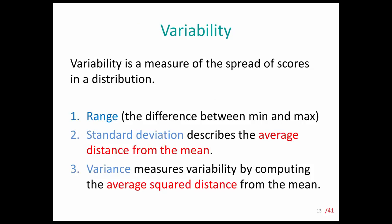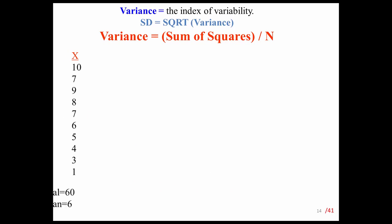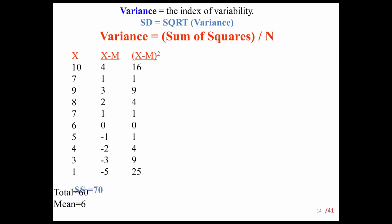Another way to describe the distribution of scores in a sample is variability, which can be shown in terms of a range — the difference between the minimum and maximum score — the standard deviation, which is the average distance from the mean, and the variance, which is the average squared distance from the mean.